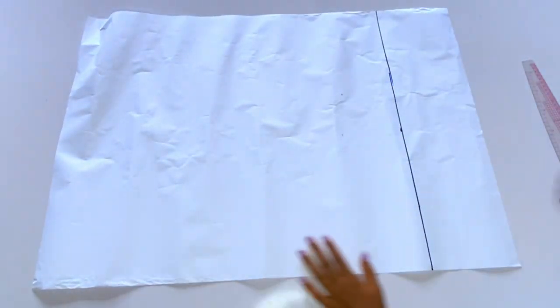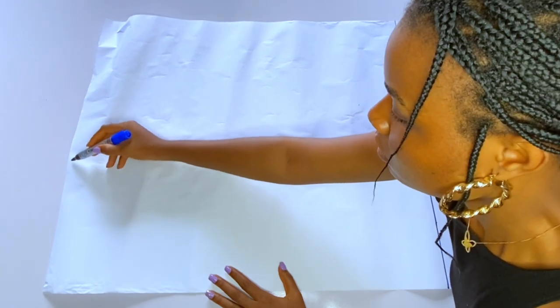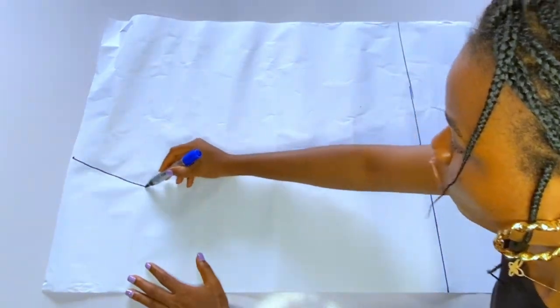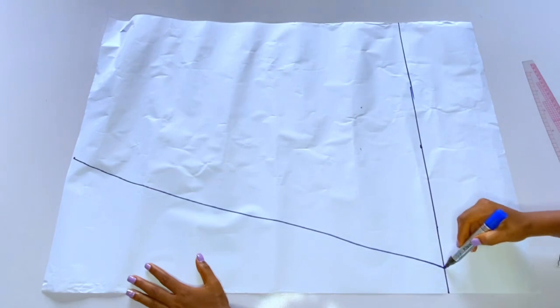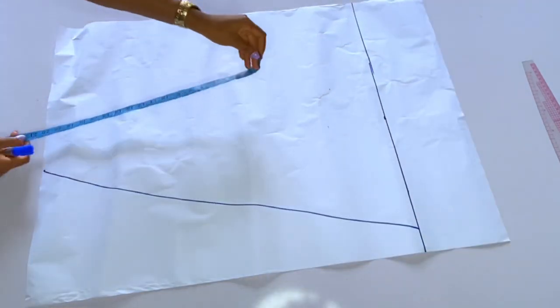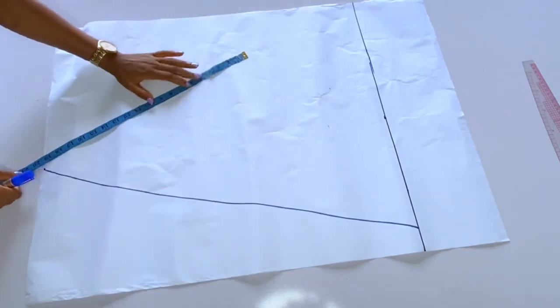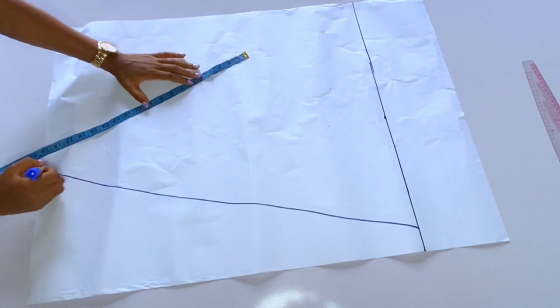The next thing that I'm going to do is that I will mark an A shape, a very wide A. So from the top of the paper I will mark my first A line. You can see the A line there. And then on the other side of this paper I will mark another A shape.